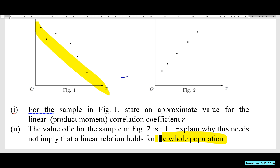You have collected only five sample data points. The question asks why a strong linear relationship in the sample does not necessarily imply the linear relationship holds for the whole population.